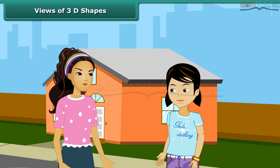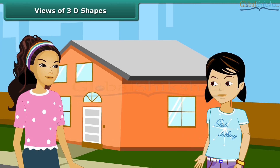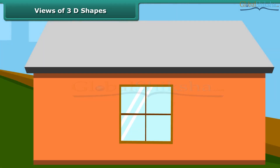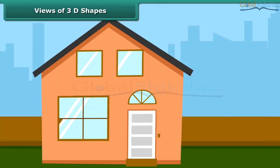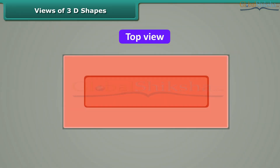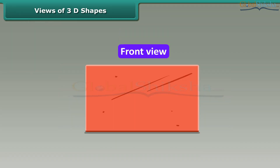Do you know that three-dimensional objects look different from different positions? Look at our house — it can have many views. This is the side view of the house, this is the front view, and this is the top view. Similarly, this brick can have different views: top view, side view, and front view.